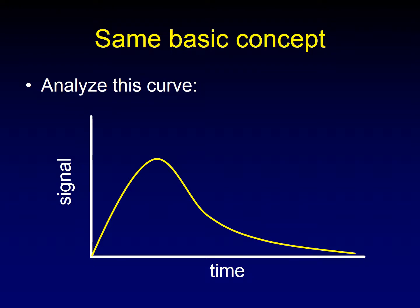The basic concept is that we're trying to analyze this curve. This curve is a plot of signal — whether that is CT density, MRI intensity, or the inverse of MRI intensity in the case of susceptibility imaging — and it's signal of some sort over time. What we see when we measure a bolus of contrast entering the brain parenchyma is that the contrast rushes in, then peaks, and then flows back out again. This is the systolic portion of the curve and this is the diastolic portion of the curve.